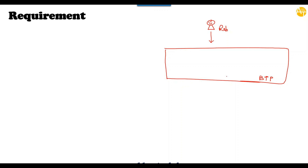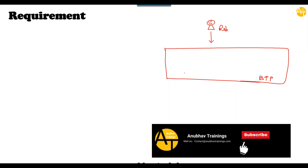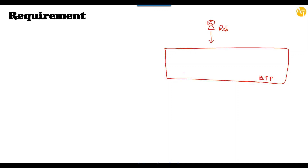SAP Integration Suite allows companies and the developer community to integrate Cloud and on-premise solutions together, where it works as a middleware. We use Cloud Platform Integration to create iFlows to flow data between different systems. There are different kinds of adapters available, like SOAP adapter, OData adapter, and different mechanisms to also include scripting, like Groovy script, to integrate content from one place to another.